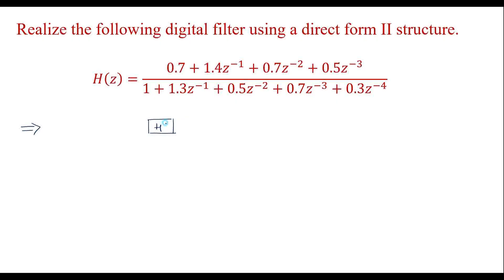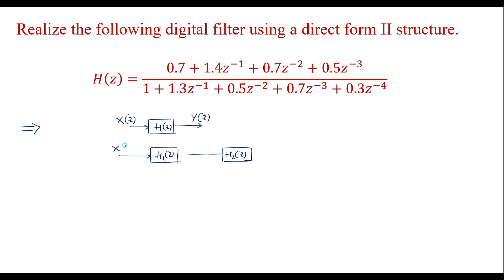Suppose we consider this as the transfer function H of Z, where X of Z is the input and Y of Z is the output. I will split H of Z into two sub-functions: H1 of Z and H2 of Z, connected in cascade. W of Z is the intermediate output, which acts as the output of the first block and the input for the next block. H1 of Z is with respect to poles, and H2 of Z is with respect to zeros.